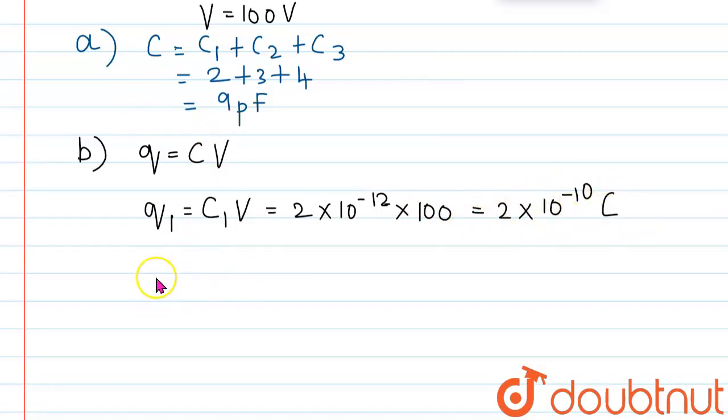And then, let's find Q2, which is the charge on capacitor C2V. So, for my C2V, C2 value is 3 into 10 power minus 12 into V value is 100. Solving this, we get the value of Q3, that is, charge on capacitor 2 is found to be 3 into 10 power minus 10 coulomb.